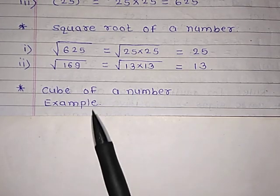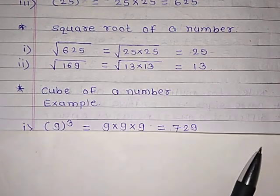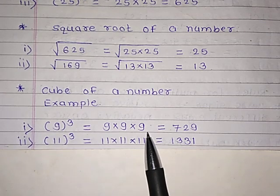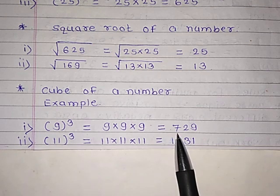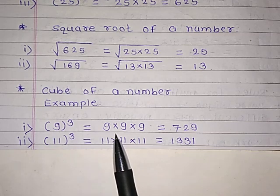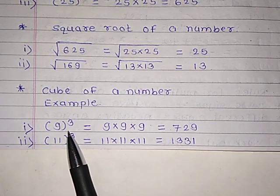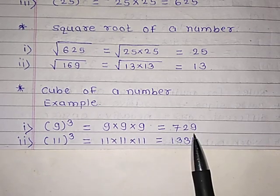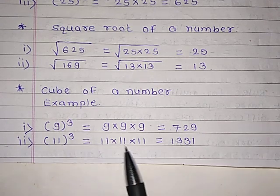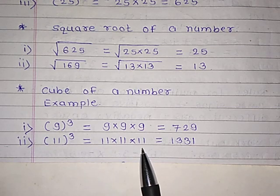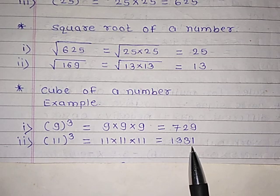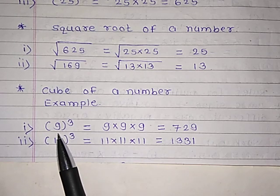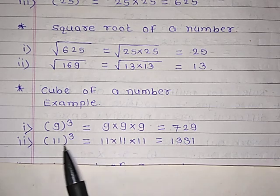Next concept: that is the cube of a number. When we multiply a number three times — for example, 9 multiplied by 9 multiplied by 9 equals 729 — a number which is multiplied thrice gives us the cube of that number. After multiplying 9 three times, we get 729. Similarly, when we multiply 11 three times, we get 1331. So we can say 729 is the cube of 9, and 1331 is the cube of 11.